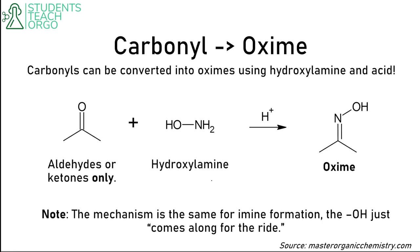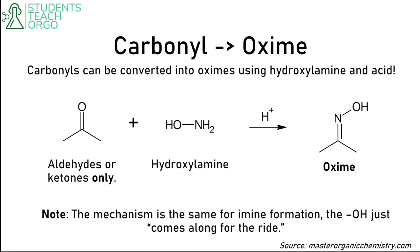Carbonyls can be converted into oximes using hydroxylamine and acid. The acid just makes the reaction go faster. The mechanism is exactly the same as imine formation; you form the C=N functional group, and the oxime just has an OH attached to the nitrogen — the OH goes along for the ride.